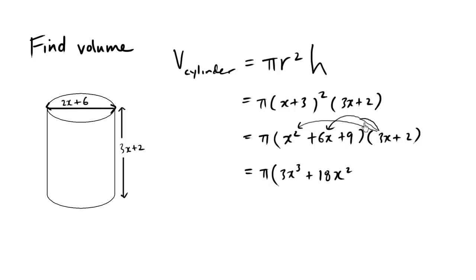And finally, this times this, which is positive 9 times 3, 27x. And now I'm going to expand out the second term. So 2 times x squared is plus 2x squared. 2 times 6x is going to be positive 12x, and 2 times 9 is going to be positive 18.